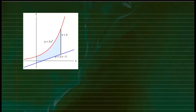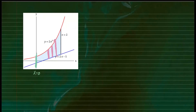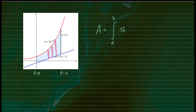Here is another example. We're going to find the area of the region bounded by these curves — the blue region shown here. Again, we construct vertical rectangles, so we have a top curve minus a bottom curve. We're integrating from x equals 0 all the way up to x equals 2. Those are the limits of integration, and now we figure out the top and bottom curves with respect to dx.